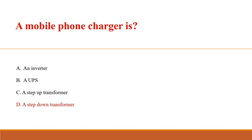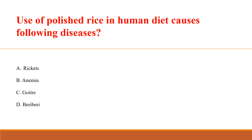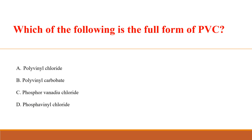A mobile phone charger is: Answer D: A step-down transformer. Use of polished rice in the human diet causes which disease? Answer D: Beriberi. What is the full form of PVC? Answer D: Polyvinyl chloride.